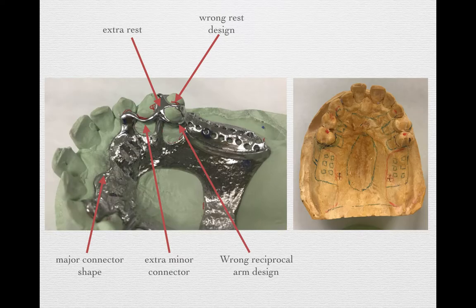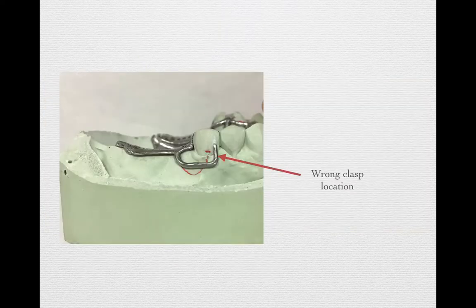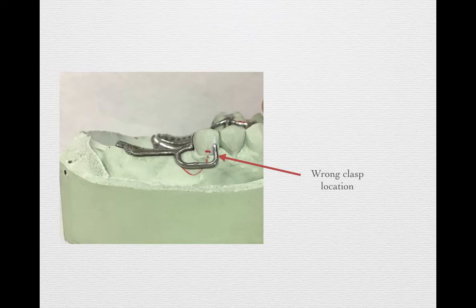Even on the occlusal part, we requested the mesial and distal rest seat, but the lab technician connected both together. When you look at the lower, we requested a middle facial undercut. You can see we marked the undercut location on the middle facial, and the lab technician even used a red pencil to mark the proper I-bar location. But when we see the cast with the model, the I-bar is on the mesio-facial — not on the middle facial.